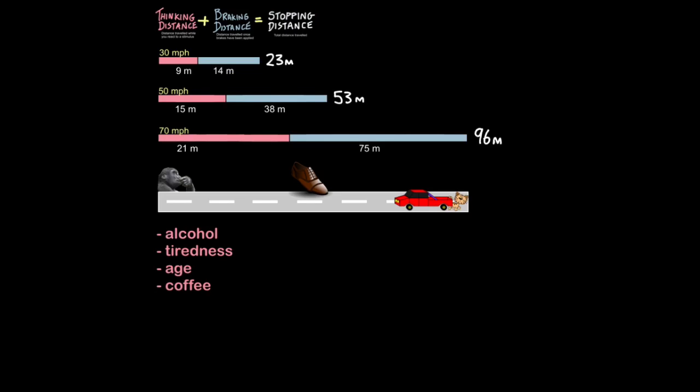For example you should never drive while you are under the influence of alcohol. And that's because alcohol slows down your reflexes, your reaction time so that greatly increases your thinking distance. If you're tired also your reactions are going to be slower so that increases your thinking distance. How old you are affects it. The older you are the slower messages basically move around your body and therefore that also increases your thinking distance. Some drugs can decrease your thinking distance. For example caffeine in coffee is a stimulant so that will shorten the distance whilst reacting to a stimulus.